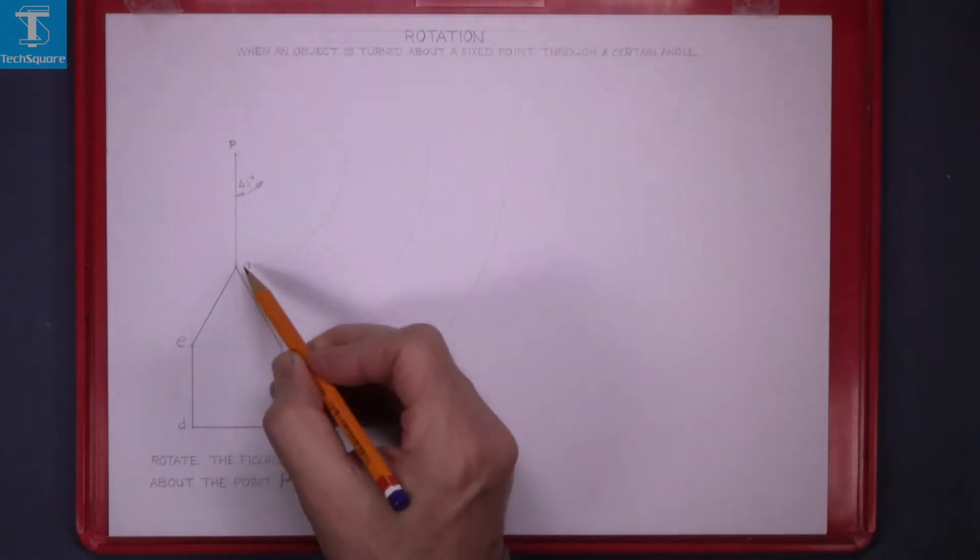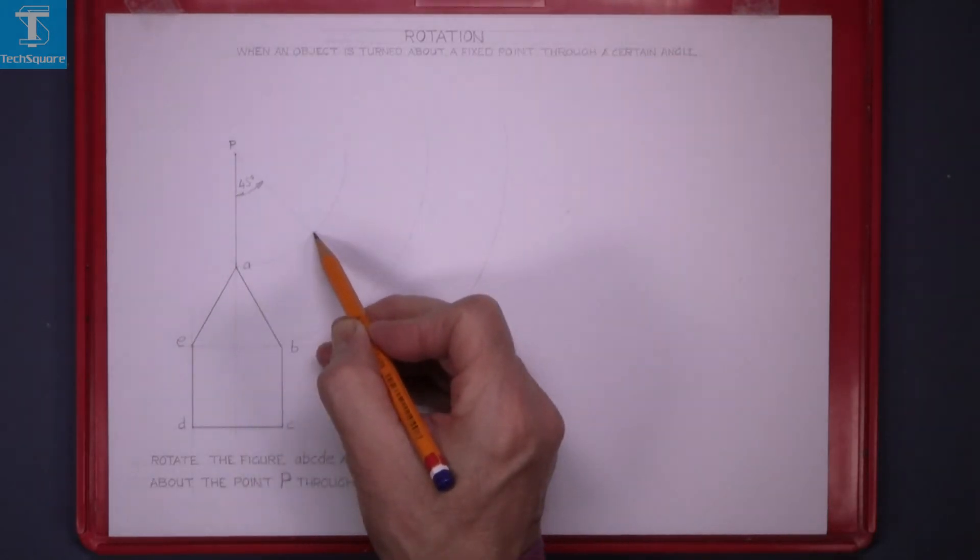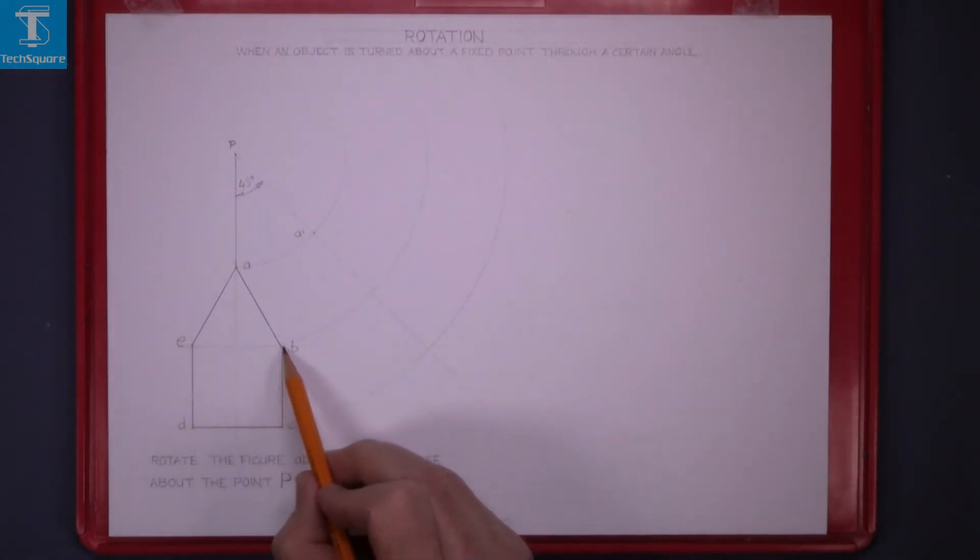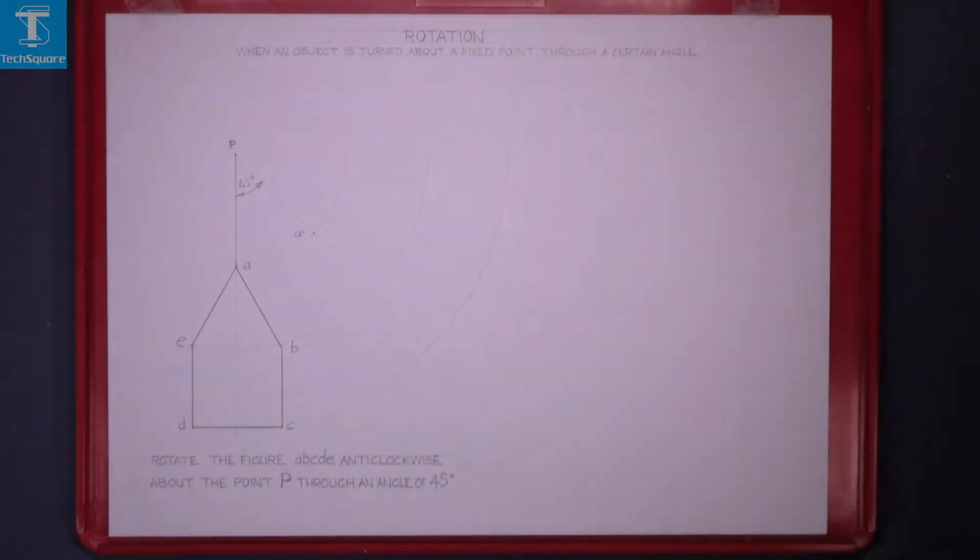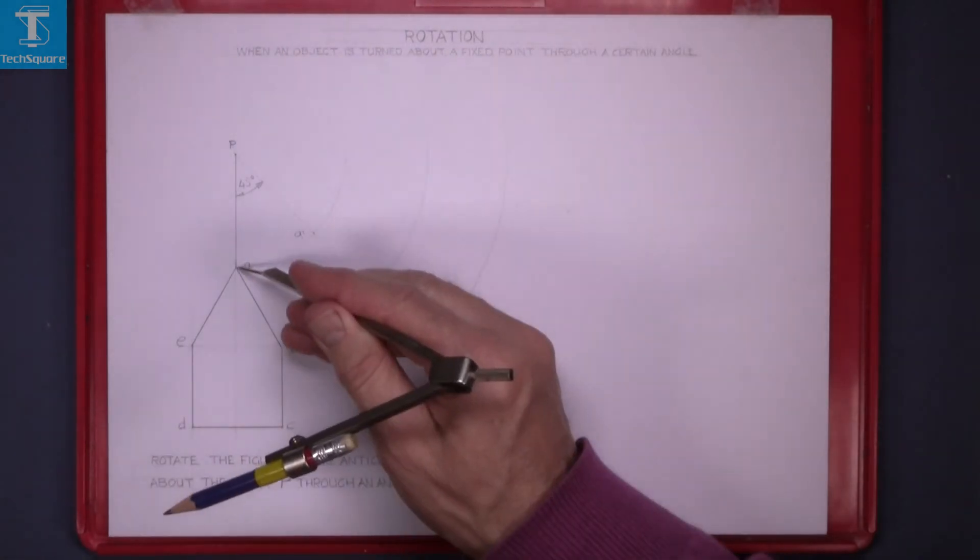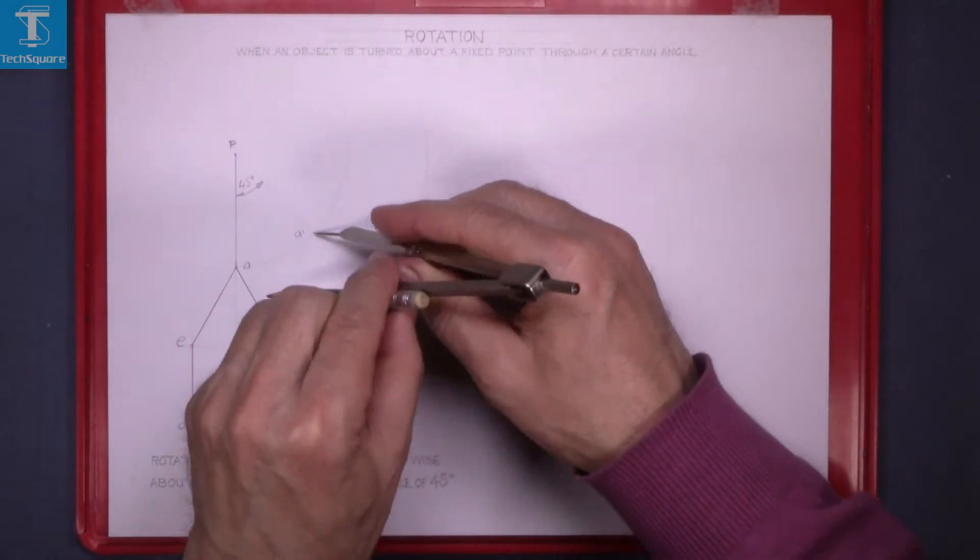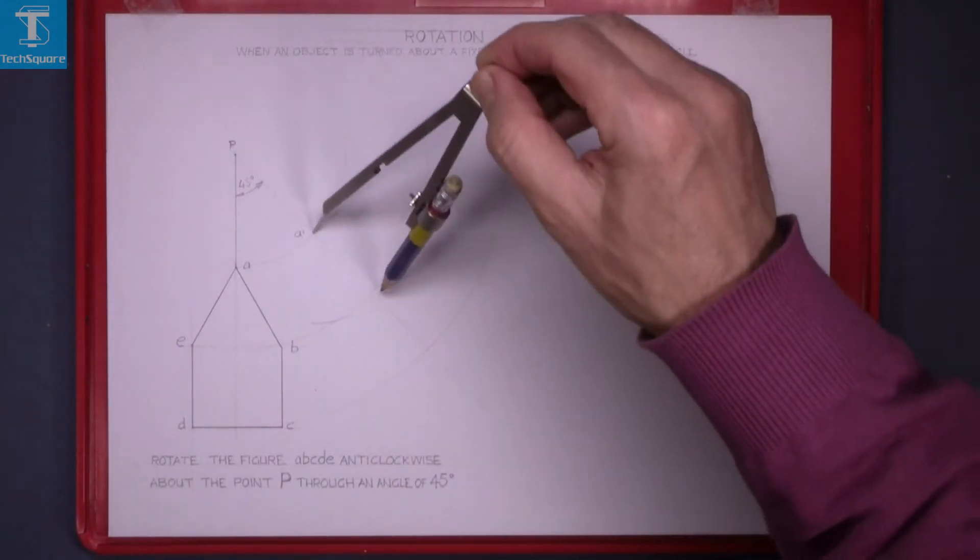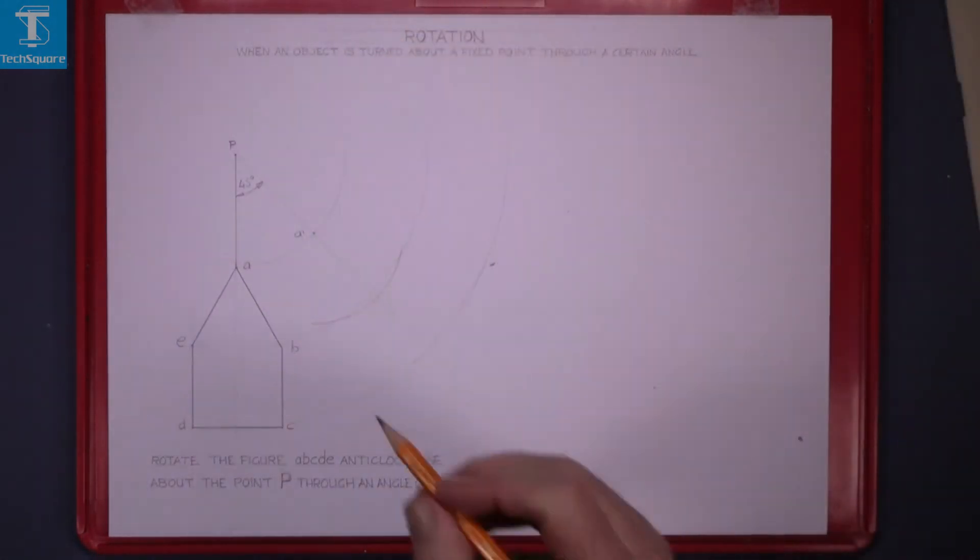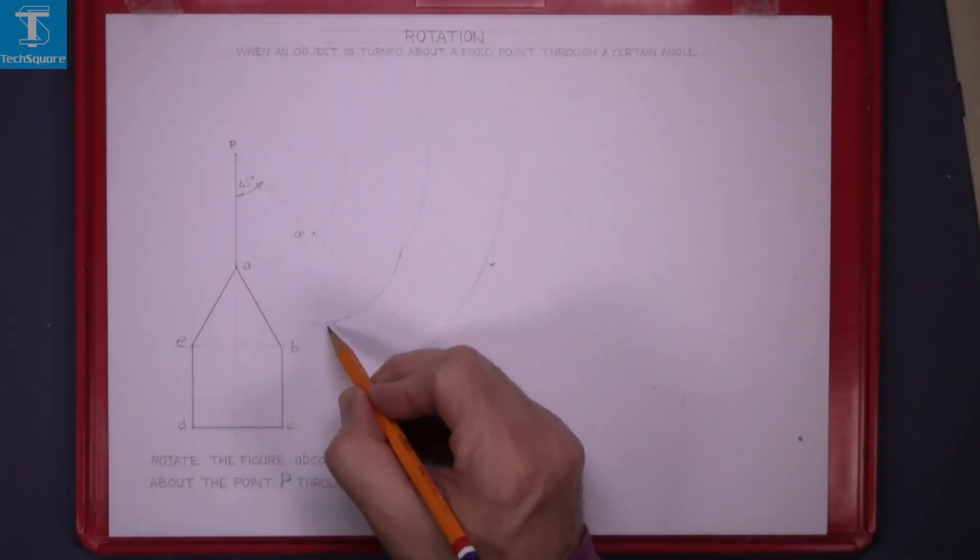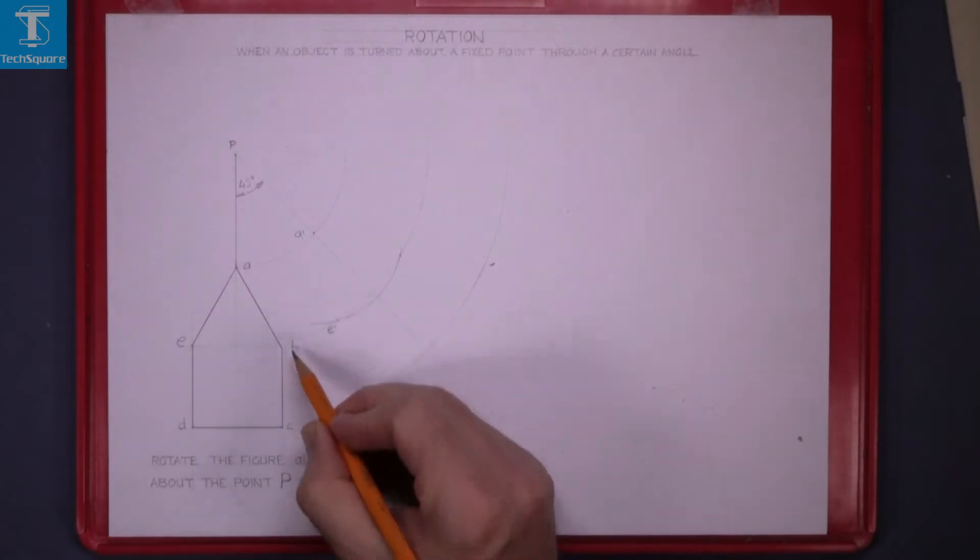Point A will move to this new position. Point E and B are going to be on this line, so set from A to E, put the point of compass in new A and draw an arc to cut the other arc and that gets point E and B. E1, B1.